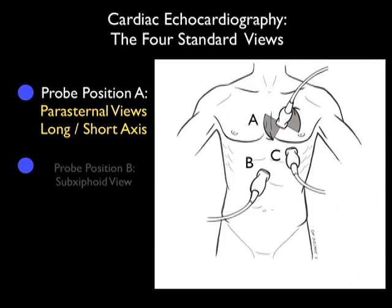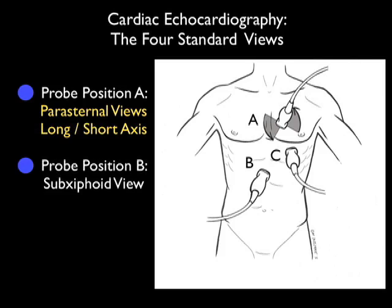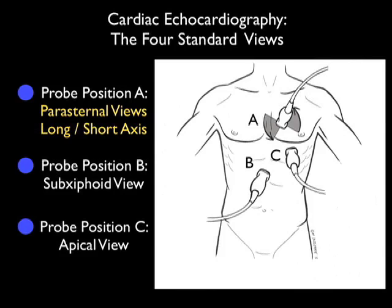Recall that the parasternal long axis view of the heart is obtained by placing the probe into position A as shown here. That will configure the probe just left of the sternum at about intercostal space 3, with the marker dot down towards the patient's left elbow.